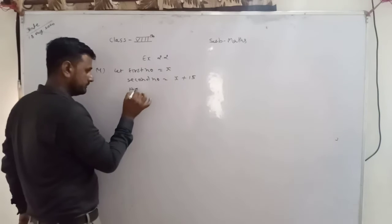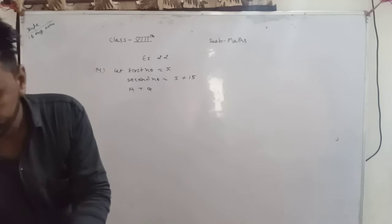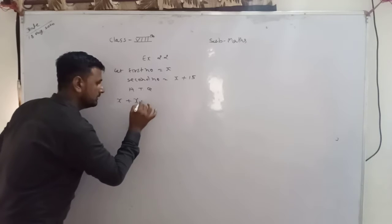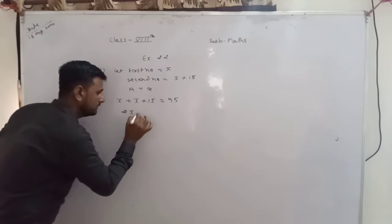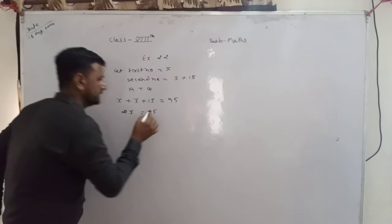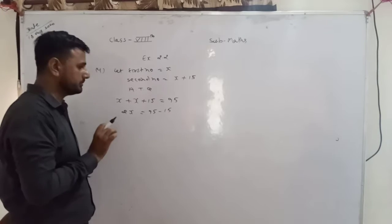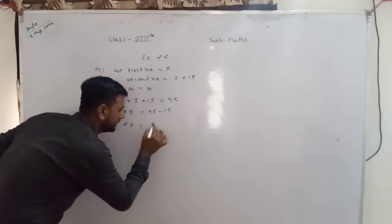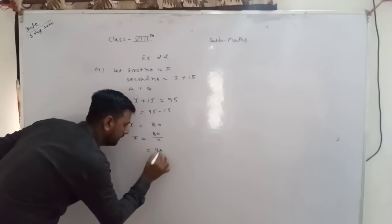According to question, sum of numbers यानि दोनों numbers को add करेंगे तो x plus x plus 15 is equal to 95। तो 2x is equal to 95। 15 को transfer करेंगे, minus में जाएगा। Signs जो होते हैं: plus में हो तो minus में, minus में हो तो plus में, multiply में तो divide, divide है तो multiply। तो 2x equal हो गया 95 minus 15 = 80। x equal हो गया 80 upon 2, तो x equal क्या हो गया: 40।